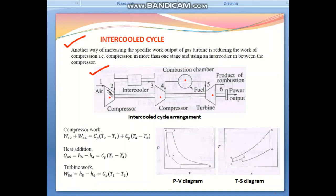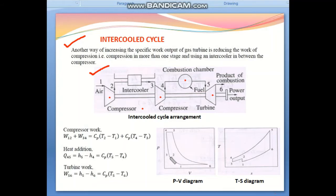First, air is sucked into Compressor 1 and compressed — that is the 1-to-2 adiabatic compression process. In the PV diagram this is the 1-to-2 process. The temperature increases from 1 to 2 as shown in the TS diagram. Then the compressed air is passed through the intercooler, where its temperature is reduced in a constant pressure process — that is process 2-to-3.